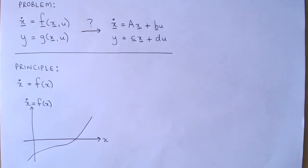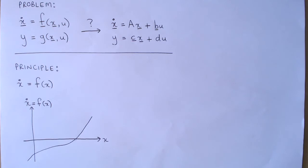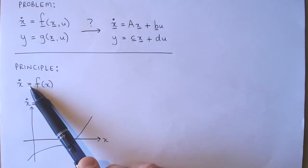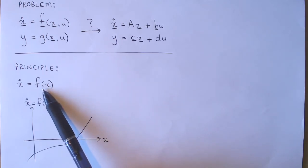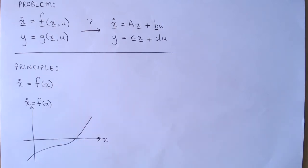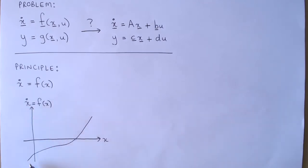Before we discuss how to linearize a system, let's first look at the principle of linearization. Consider the simplest possible system: one with only one state x and no input, and let's only look at linearizing the state equation. The non-linear state equation is given by this equation, where the derivative of x is a non-linear function of x. We can visualize the system as follows, where the derivative of x is a non-linear function of x.